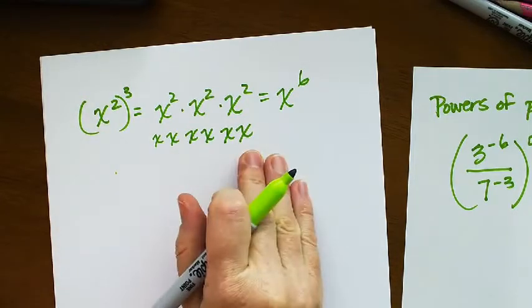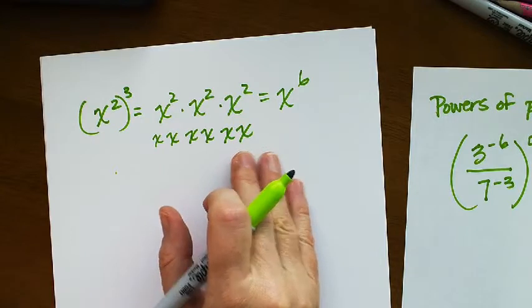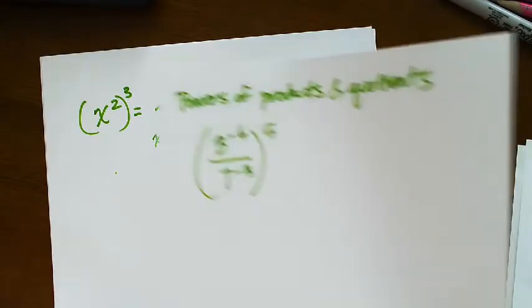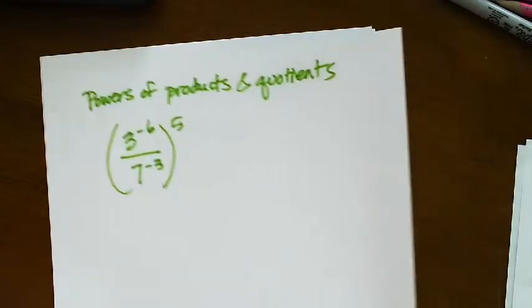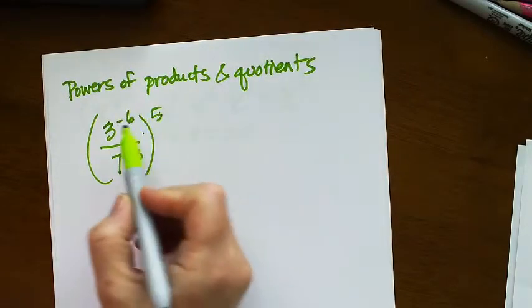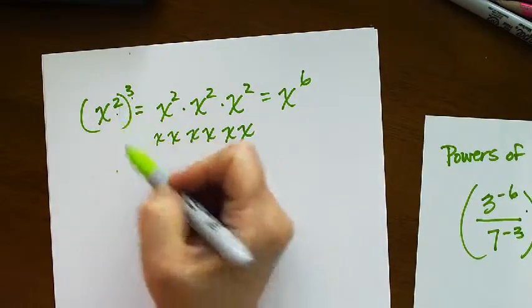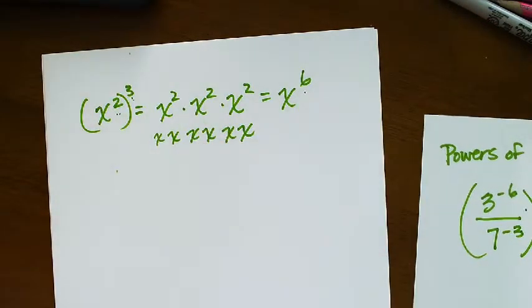So if you get confused on your rules, do a simple example to kind of refresh your memory, write it out. You don't want to write out something with huge exponents. When I'm raising a power to a power, the shortcut is just multiply the exponents. 2 times 3 is 6.